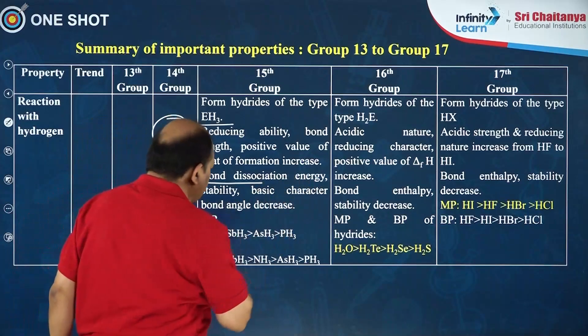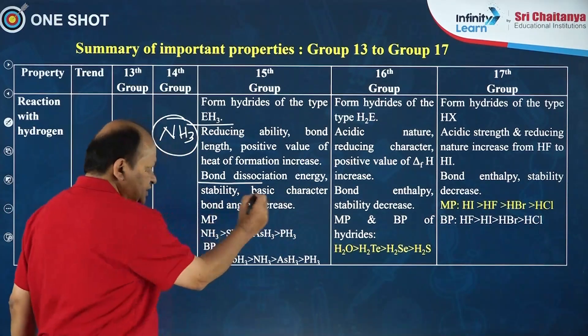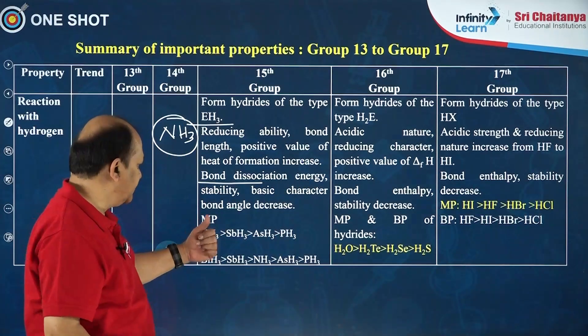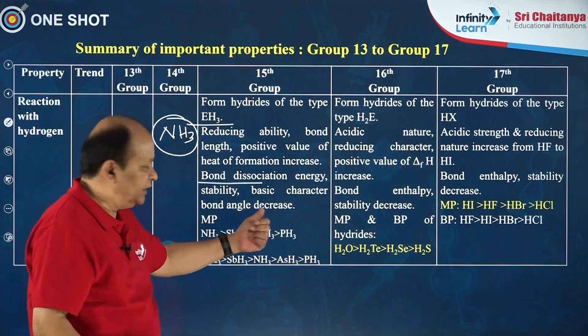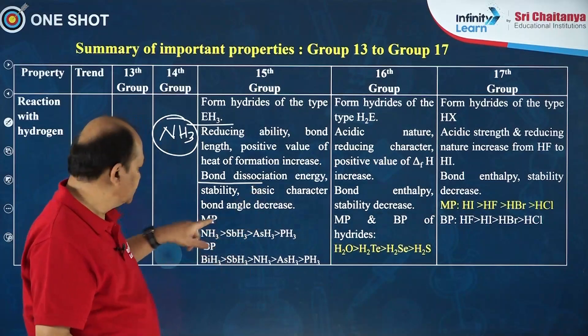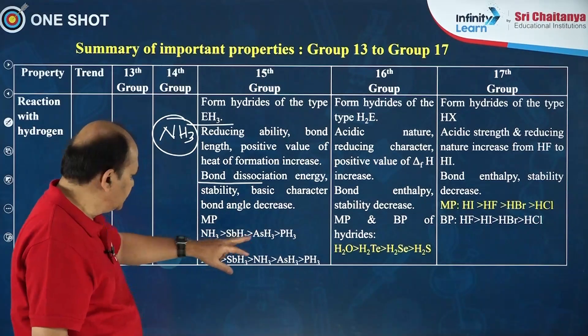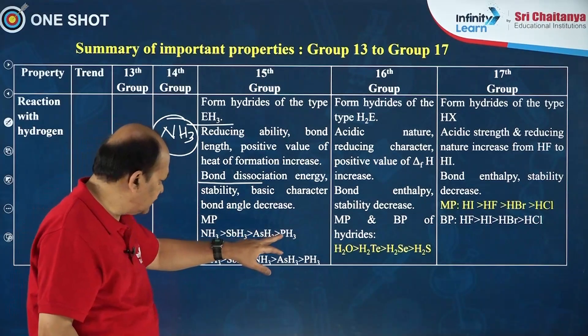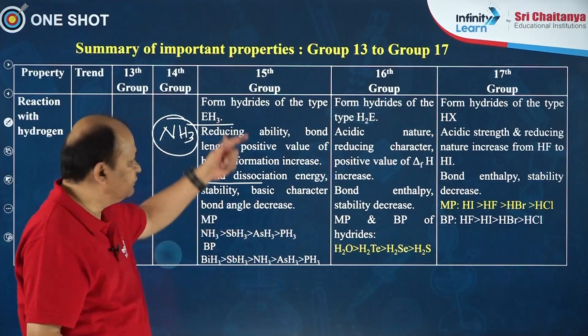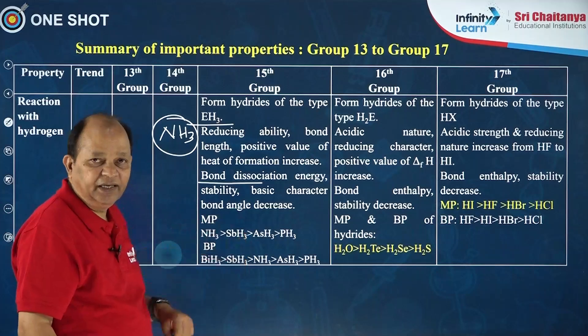Bond dissociation energy, stability, basic character, and bond angle all decrease down the group. These are the orders of melting point and boiling point of these group 15 hydrides.